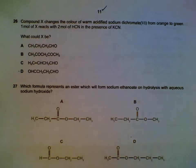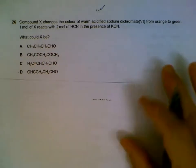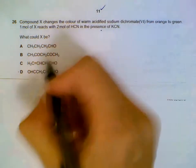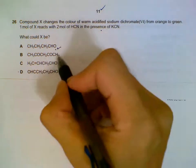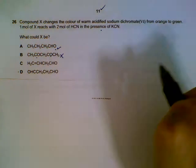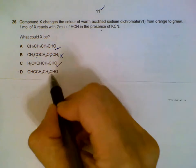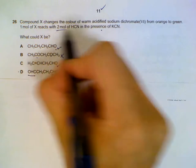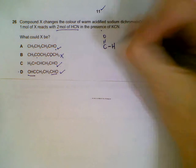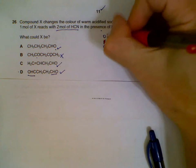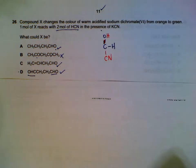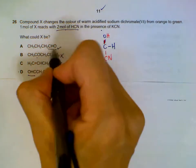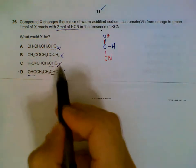Question 26: Compound X changes the color of dichromate, meaning it can be oxidized and contains a carbonyl group. Aldehydes can be oxidized, so they are possible candidates; ketones cannot be oxidized and are eliminated. Compound X also reacts with two moles of HCN. One aldehyde group reacts with one mole of HCN, so reacting with two moles of HCN means you need two aldehyde groups. The structure with only one aldehyde group is eliminated, leaving the structure with two aldehyde groups as the answer.